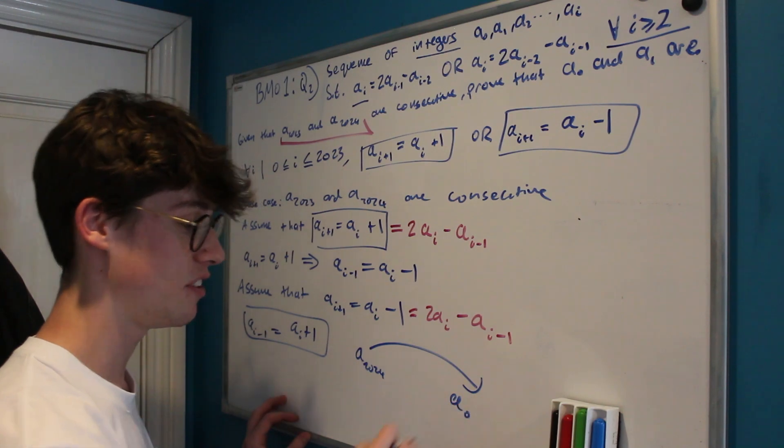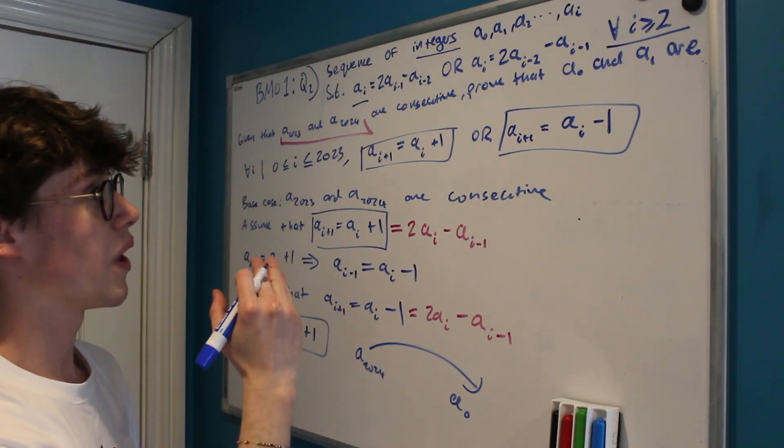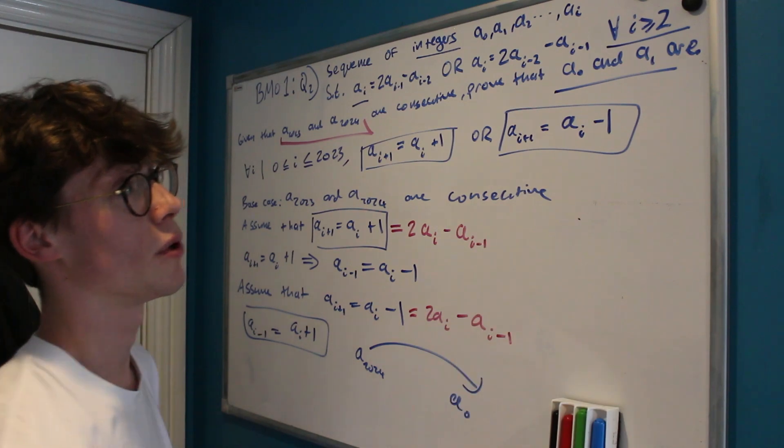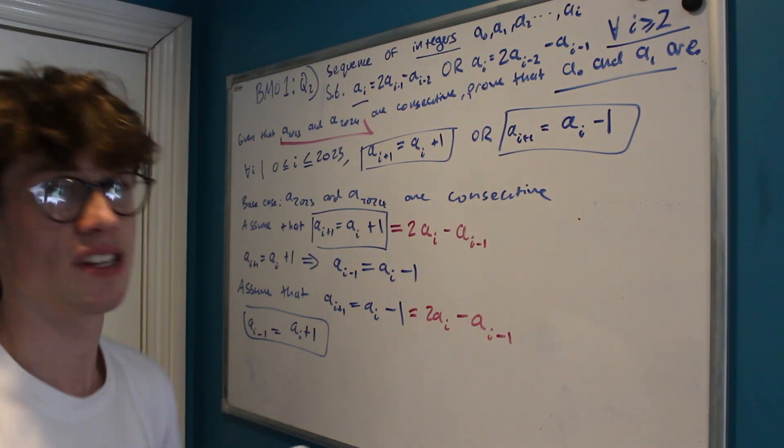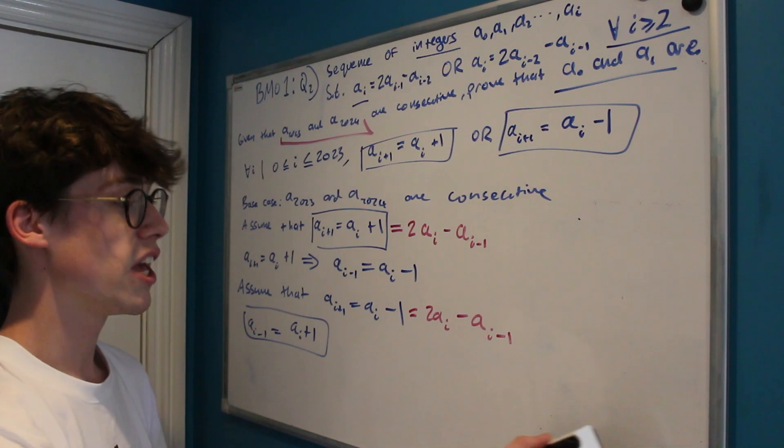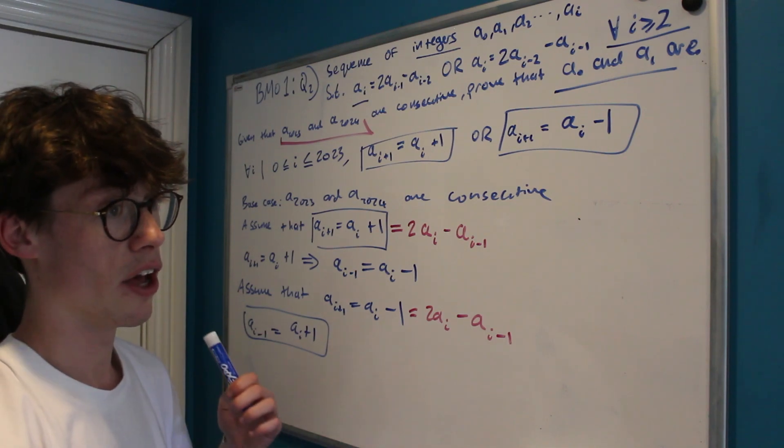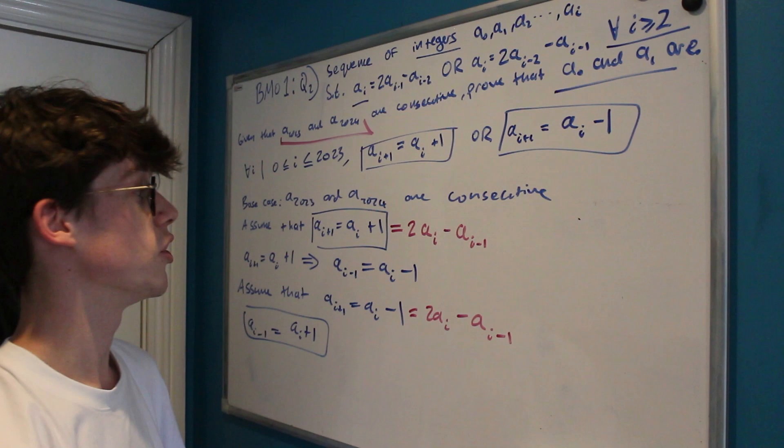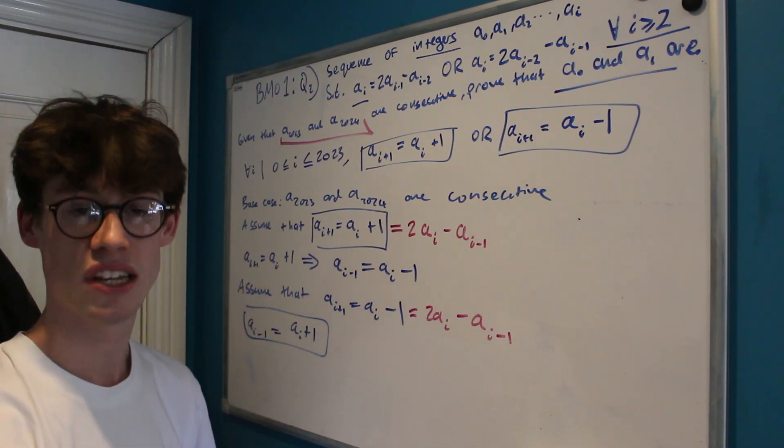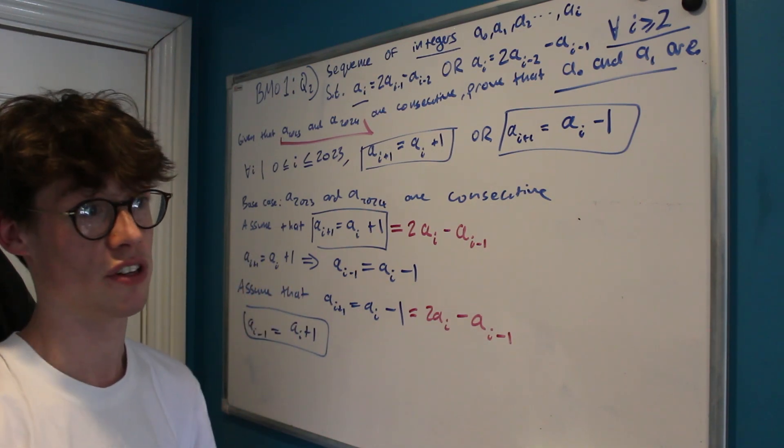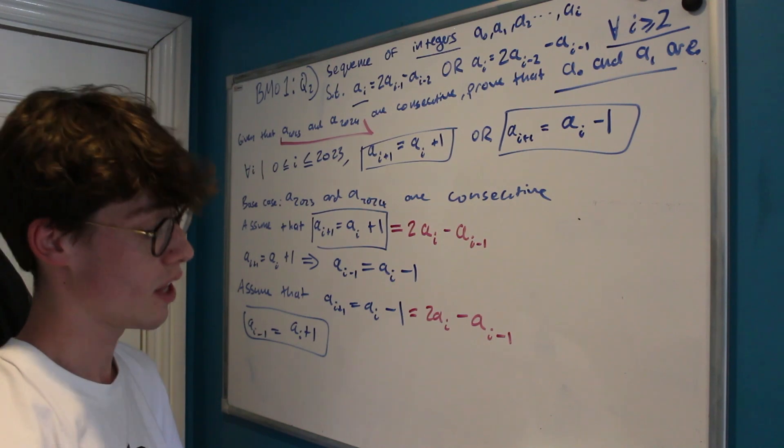And therefore we have proved of course that a0 and a1 must be consecutive. And of course we want to write up a little conclusion. I'm not going to write it out here because that's something you can do yourself, but we'd want to say something along the lines of: therefore we have shown that for all possible cases of our sequence being consecutive, if a2023 and a2024 are consecutive and we assume that ai plus one and ai are consecutive, implies that the entire sequence must be consecutive starting from zero. And so by the principle of induction we've proved what we were searching for, which was that a0 and a1 are consecutive integers.